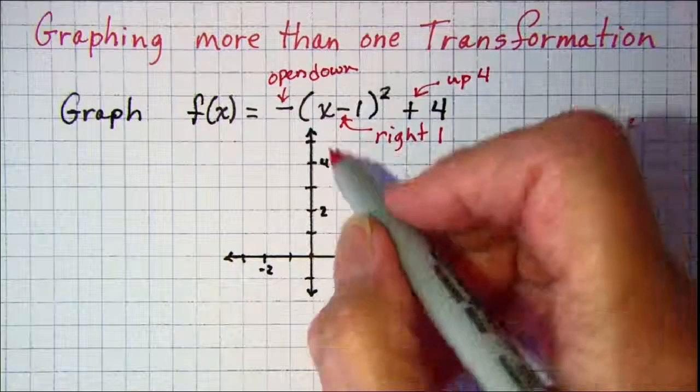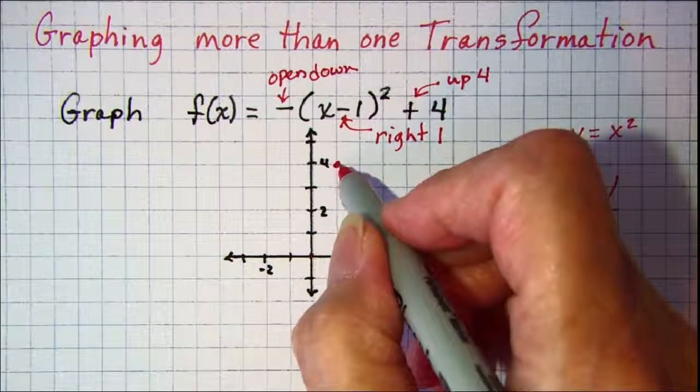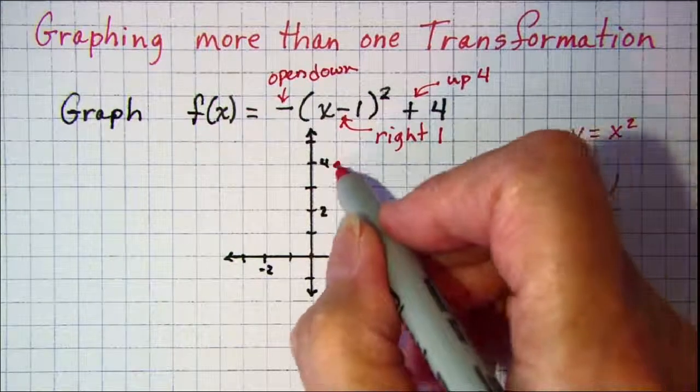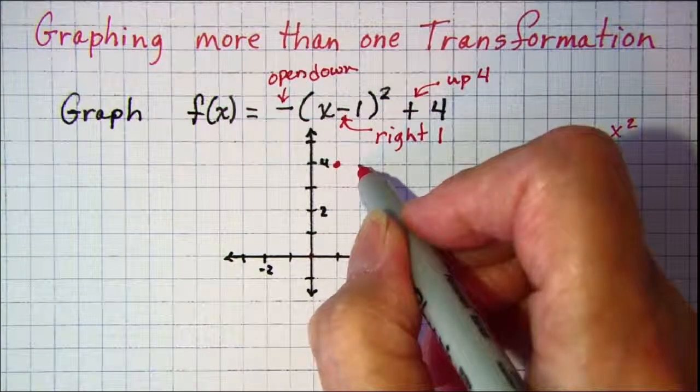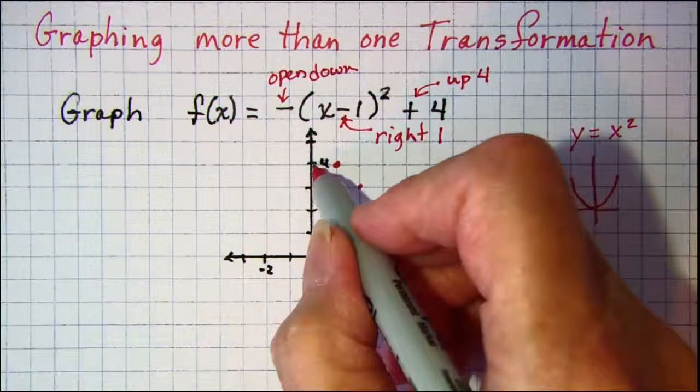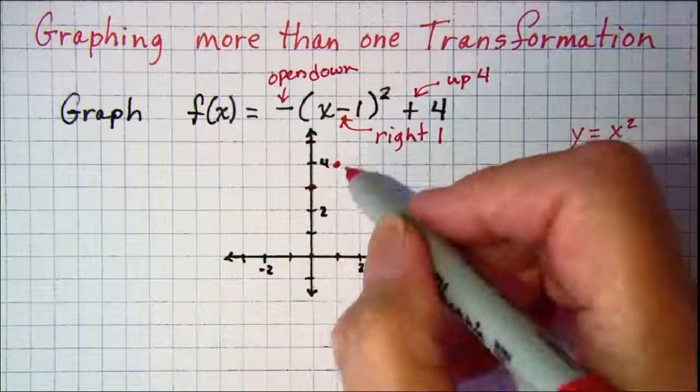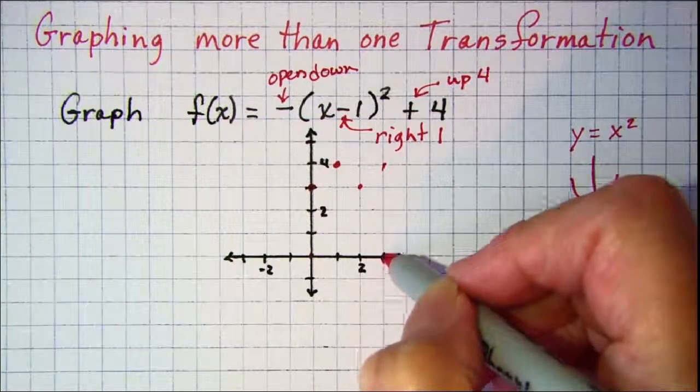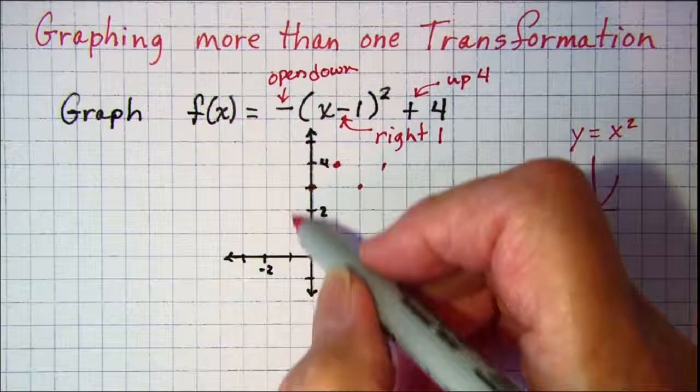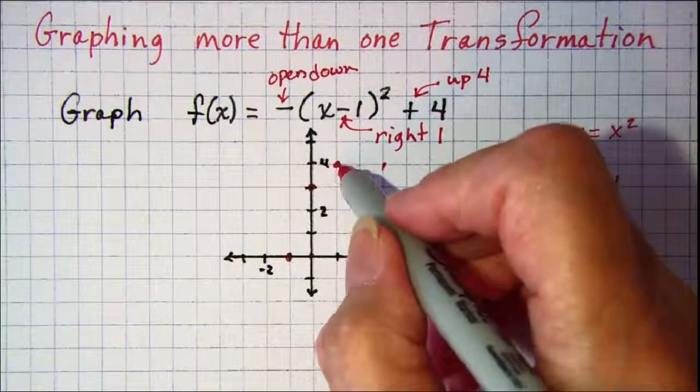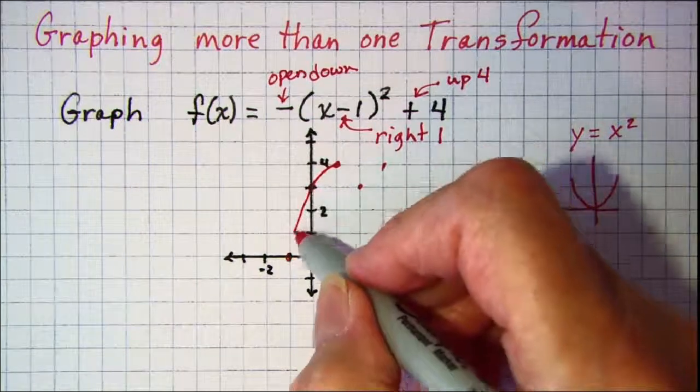The normal function when we go right 1 we usually go up 1, but on this one since we want it to open down, we'll go right 1 down 1 and then left 1 down 1. Right 2 down 4 and left 2 down 4. So this f(x) graphs like this.